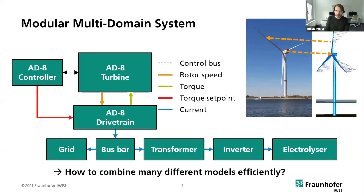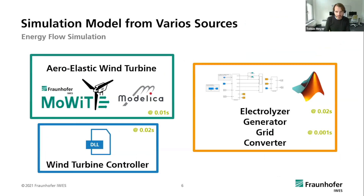In a proof of concept, we have built a modular multi-domain system for our experimental wind turbine, which is composed of the turbine itself, the drivetrain, several aspects of the electrical system, and an electrolyzer for hydrogen generation. We also have the problem of combining models across different time steps, ranging from one hundredth of a second for aeroelastic simulations down to microsecond level for electrical grid aspects — or even seconds to minutes for wind-level models. This is where FMI comes in.